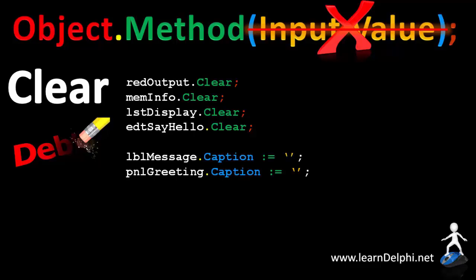Objects that have caption properties do not have clear methods. To clear a caption property, we assign an empty string to the caption property. An empty string has two inverted commas without a space between them.